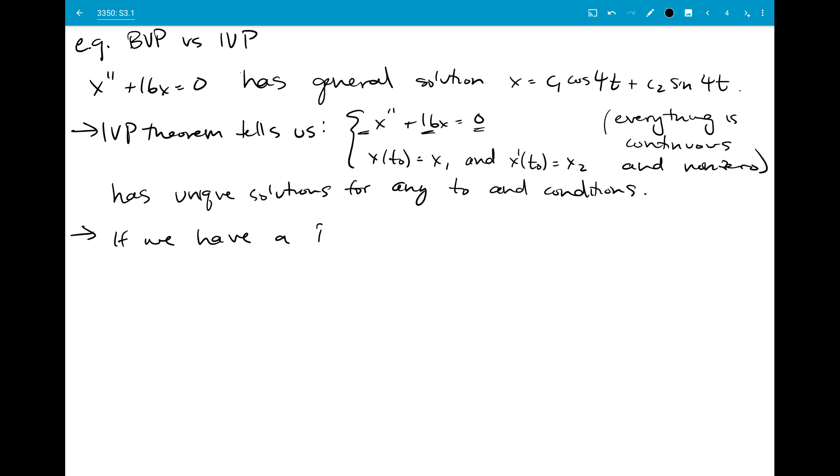But if we have a boundary value problem, things could be different. And so we're just going to look at a few different boundary value problems and see how that works. So if we look at x double prime plus 16x equal to 0, and we say my boundary goes from 0 to pi over 2, and I want my function to be 0 at both those points, then I just need to plug in these conditions to solve for my unknown constants.